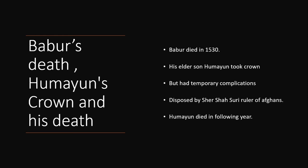Babur died in 1530, then his elder son Humayun took the crown. But he had temporary complications in 1540 when he was deposed by the Afghan ruler Shershah Suri. Eventually he was able to regain his leadership role in 1555 after defeating Shershah Suri. But unfortunately he died in the following year, leaving the next phase of the Mughal Empire in the hands of his 13-year-old heir Akbar.